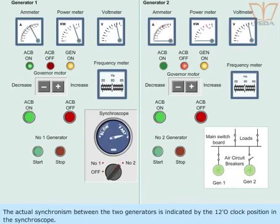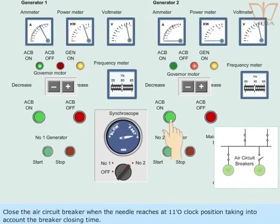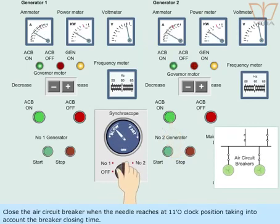The actual synchronism between the two generators is indicated by the 12 o'clock position in the synchroscope. Close the air circuit breaker when the needle reaches at 11 o'clock position, taking into account the breaker closing time.